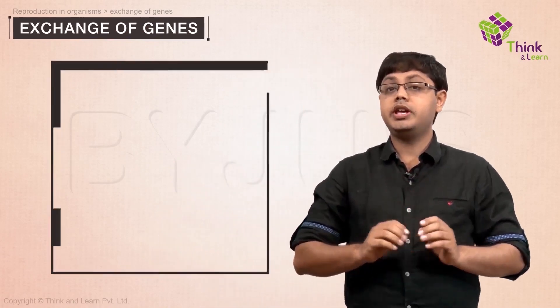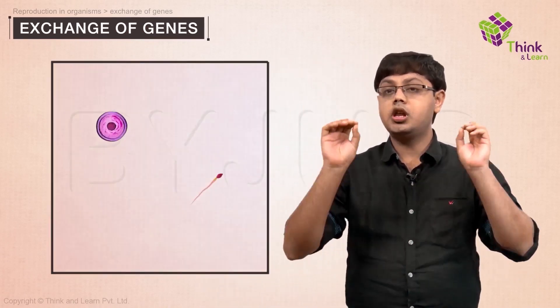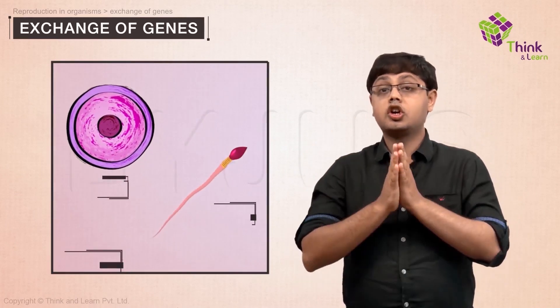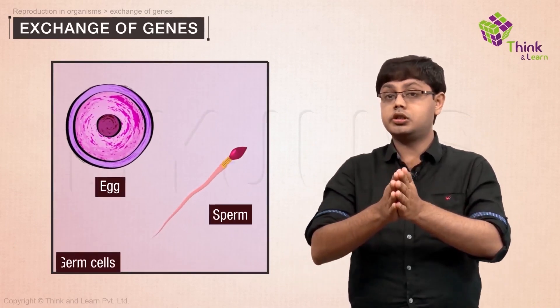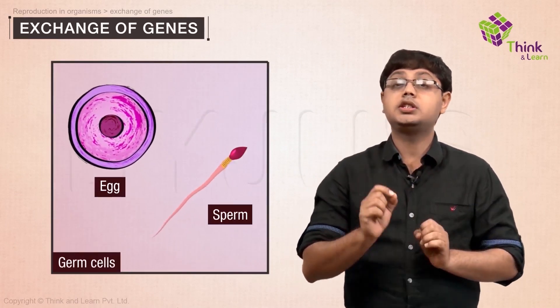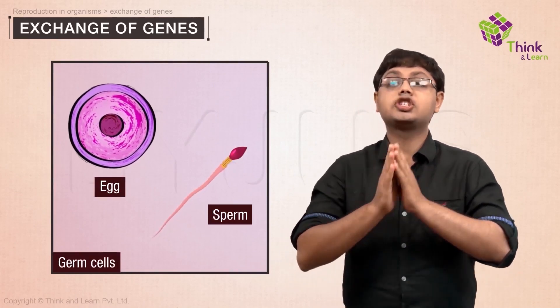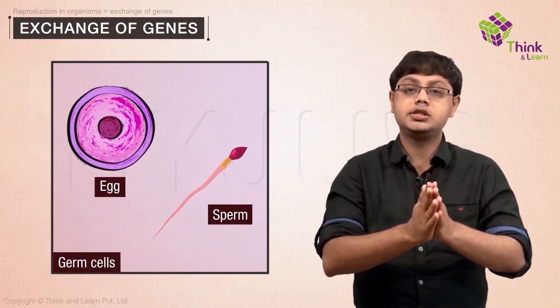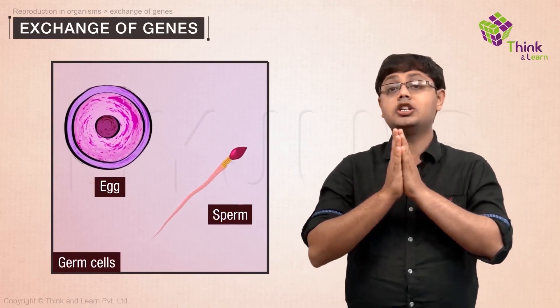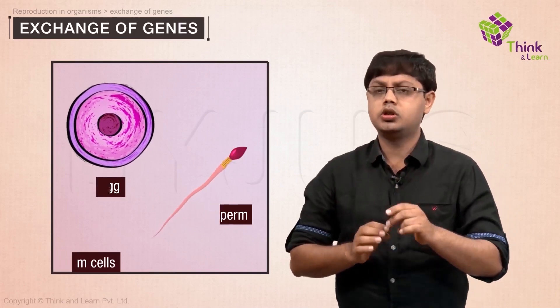What is sexual reproduction in the first place? Biologically, it is exchange of genes. A body, besides all its regular cells, makes special reproductive cells called germ cells. Do not confuse this with disease-causing microbes. A germ cell has only one set of genes, unlike an ordinary cell which has two.